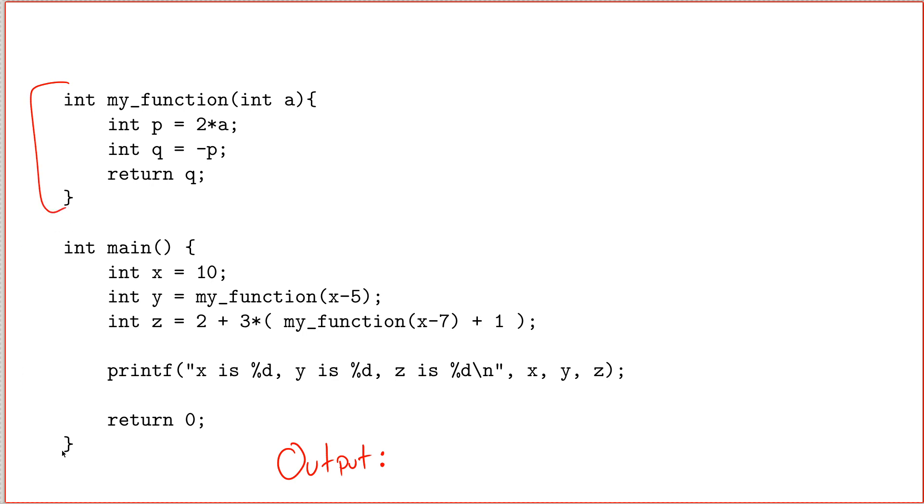Main does look a lot like a function, and it turns out that it actually is. Main is a regular function with only one special privilege, which is that it is the very first function called when any C program starts. But it is actually just a regular function in every other sense.